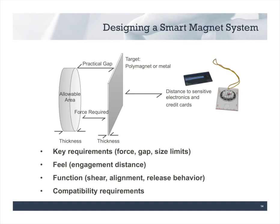That's enough about our example product. What's really important is your product. So how do we go about designing your smart magnet system? We focus on the key requirements first: what force is needed, what practical design gap you have, and what size limits you have for the magnets. Then there's feel — how do we want the product to feel as it comes together, which translates to the engagement distance of the magnets. Next we consider other functions: shear resistance, alignment features, or release behavior so it holds strongly but is easy to separate. We keep compatibility requirements in mind throughout, and with these we can find a catalog magnet or engage in a custom design.